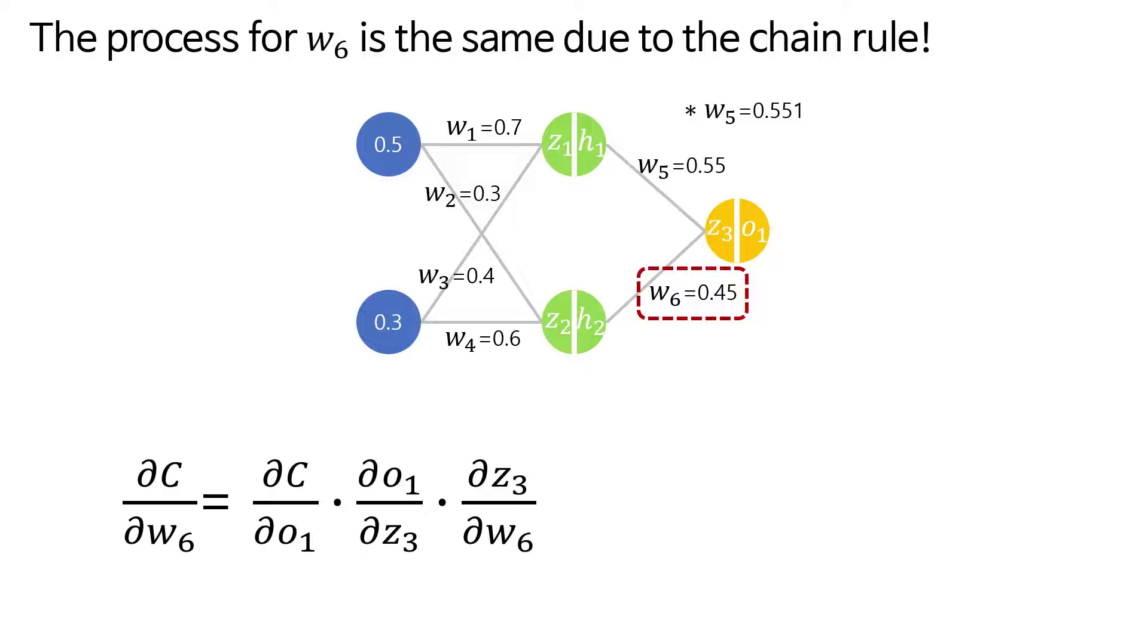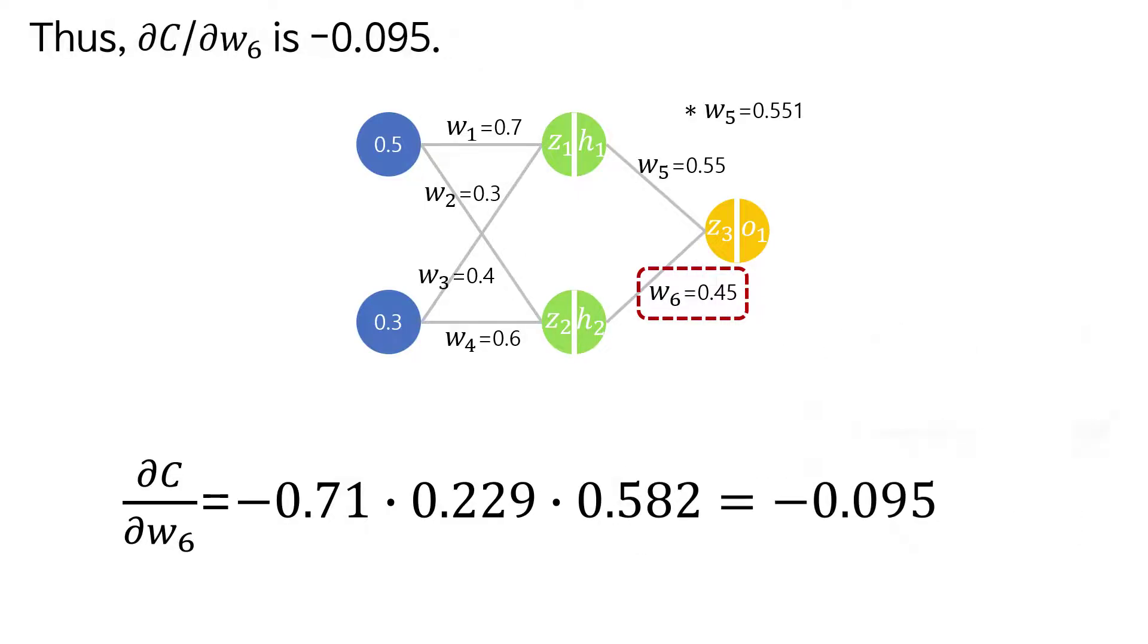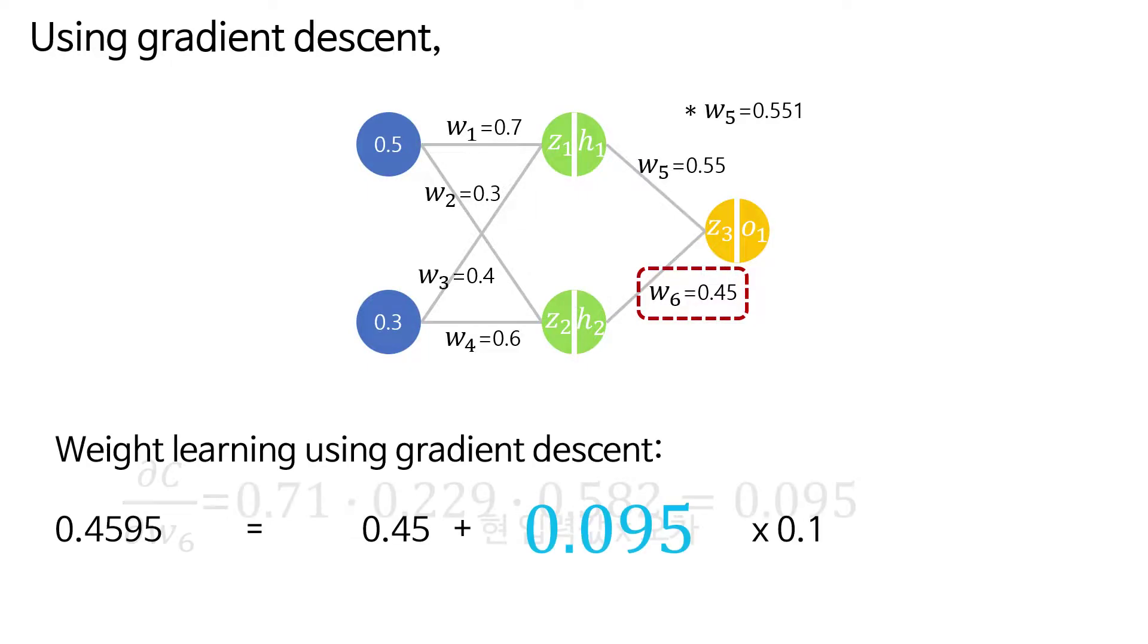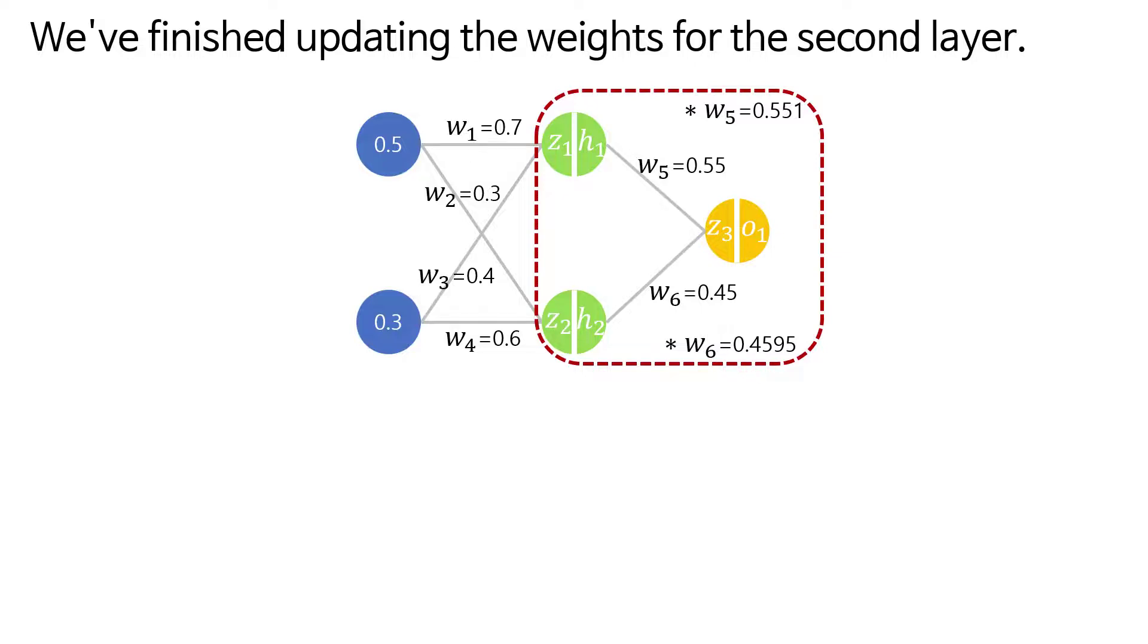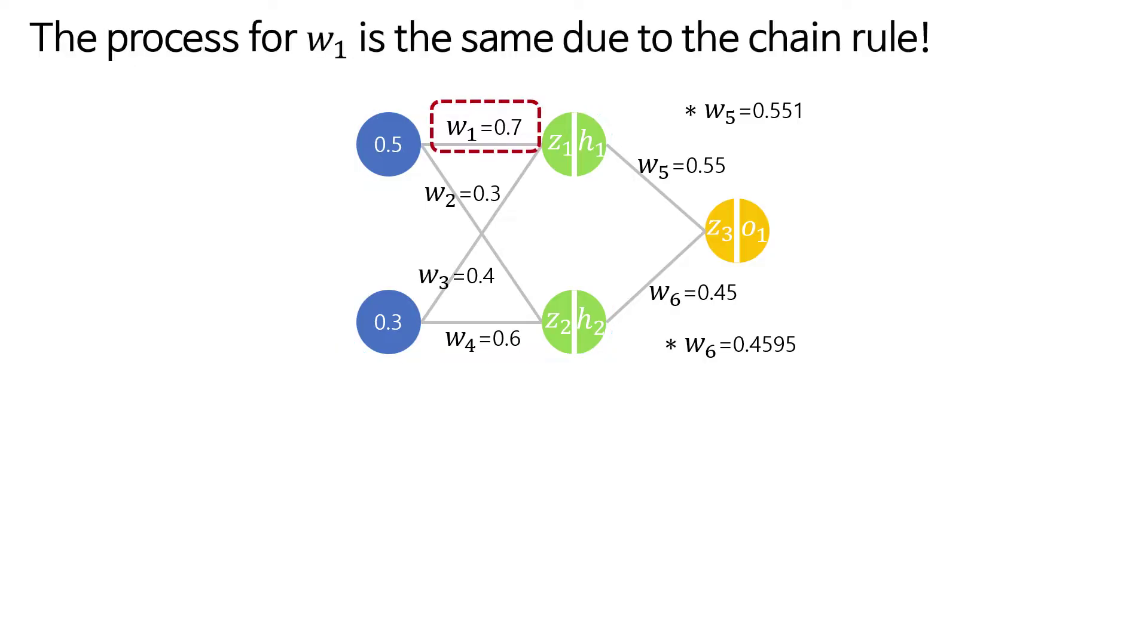The process for w6 is the same due to the chain rule. This value is the same as our previous calculation. Using these values, the third term becomes h2. Thus ∂c/∂w6 is -0.095. Using gradient descent, w6 updates to 0.4595. We've finished updating the weights for the second layer. Let's move to the first layer.